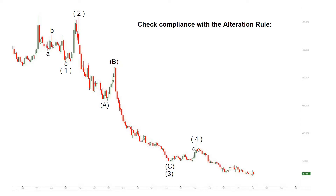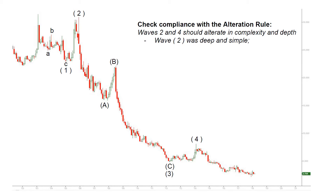At that point we should make some checks. First, we check the alternation rule: in any five-wave structure, waves two and four should alternate in both complexity, shape, and depth. Wave (2) was pretty deep — it retraced almost 100% of wave one down — but it was kind of simple, an ABC zigzag. Wave four was pretty shallow, likely not even retracing 20% of the whole wave three move down, but in contrast it was complex and took some time.